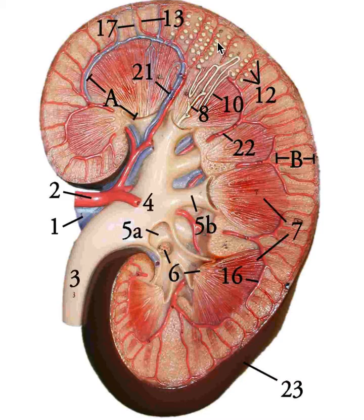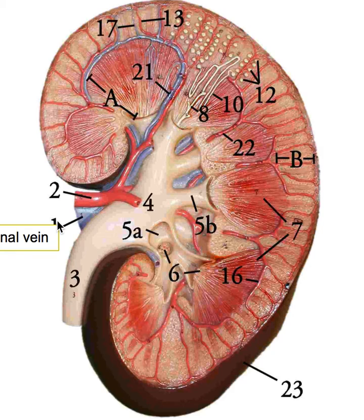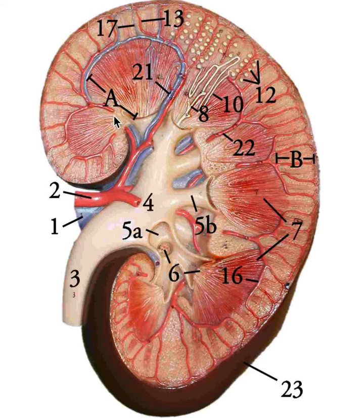These small dots in the cortex are the beginnings of the glomeruli and the renal corpuscle, which we'll examine more closely in another video. You can also see the pathway of blood flow here. Starting with the renal artery, the first branch becomes the segmental artery, then the next branch is the interlobar artery — meaning between the lobes of the kidney. From there, an artery arcs over the pyramids called the arcuate artery, and then small vessels radiate out into the cortex called the cortical radiate arteries.